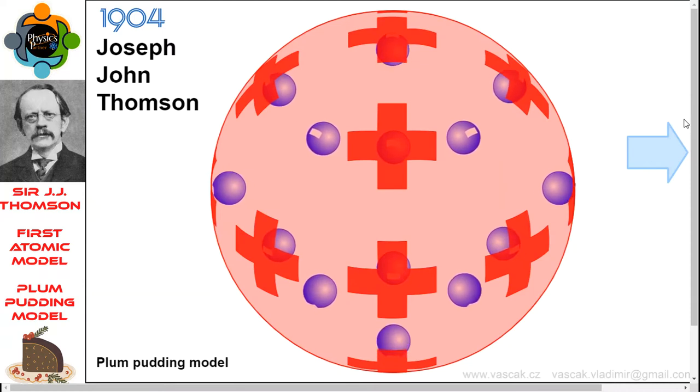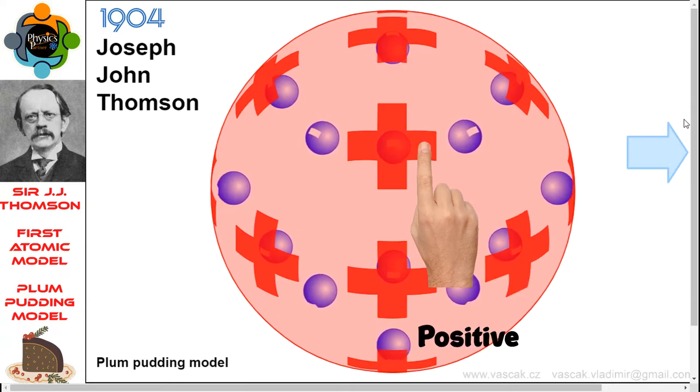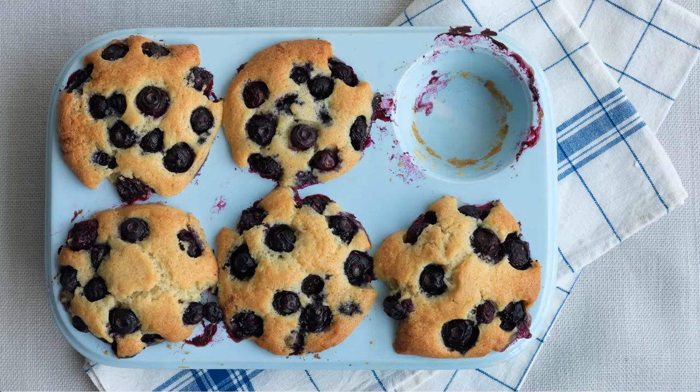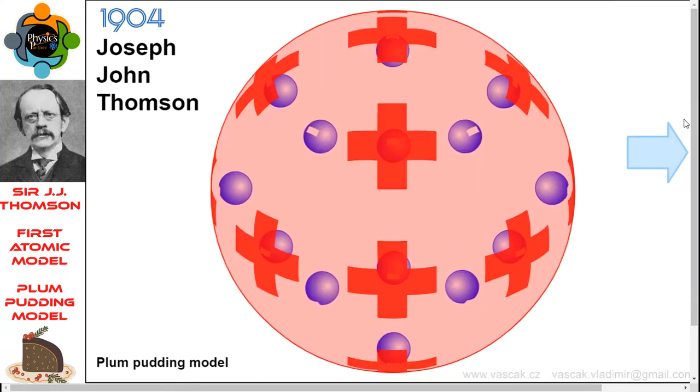In Thomson's plum pudding model of the atom, the electrons were embedded in a uniform sphere of positive charge, like blueberries stuck into a muffin. Because of this resemblance, it's called the plum pudding model. The positive matter was thought